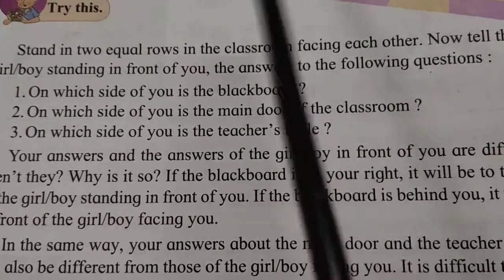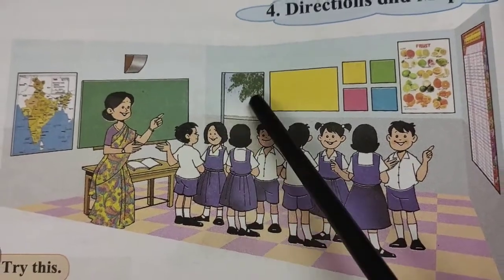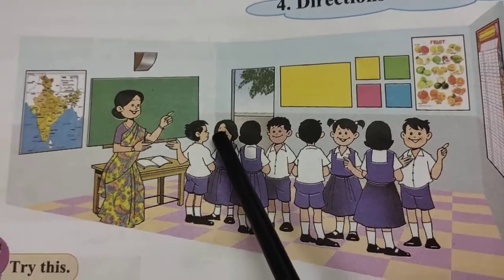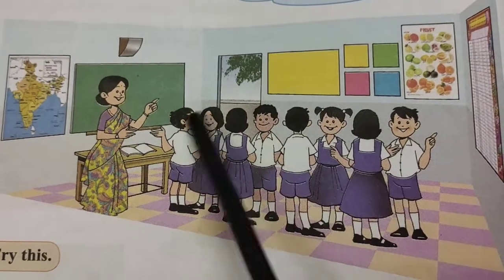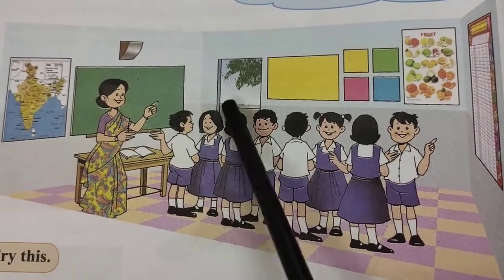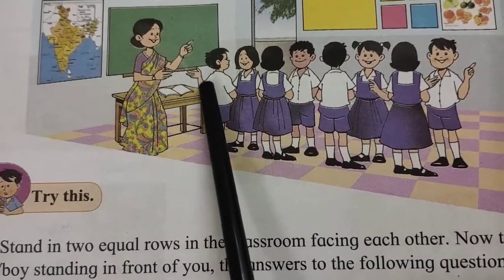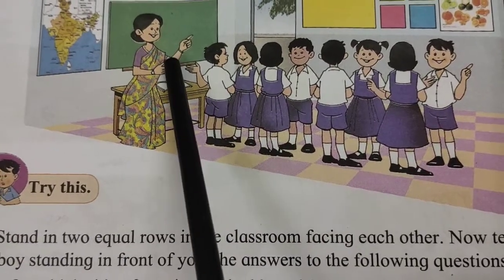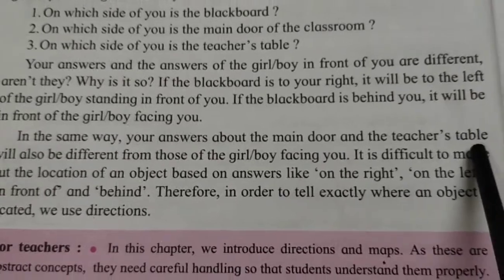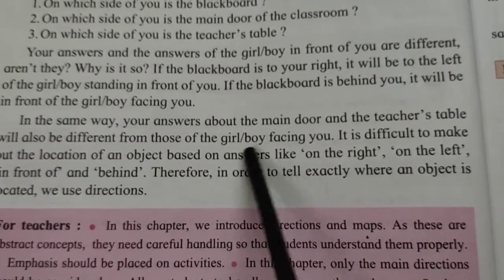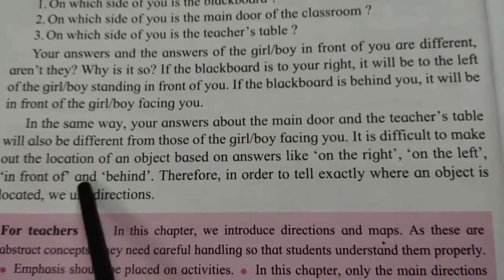On which side of you is the main door of the classroom? The girl is facing the back side, so for her it is behind. The boy is facing the front. On which side is the teacher's table? The boy will say left-hand side, and the girl will say right. So again, the answer is different. It is difficult to make out the location of an object based on answers like on the right, on the left, in front, or behind.